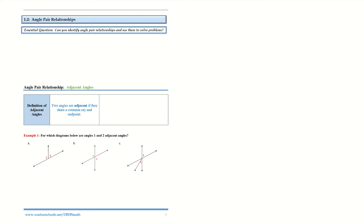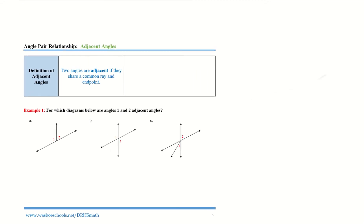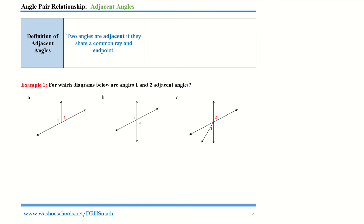Today we're going to be working on angle pair relations. Definition of adjacent angles: two angles are adjacent if they share a common ray and a common endpoint.